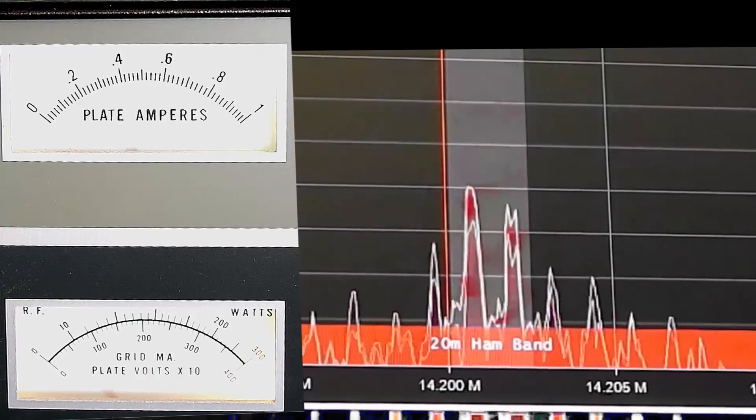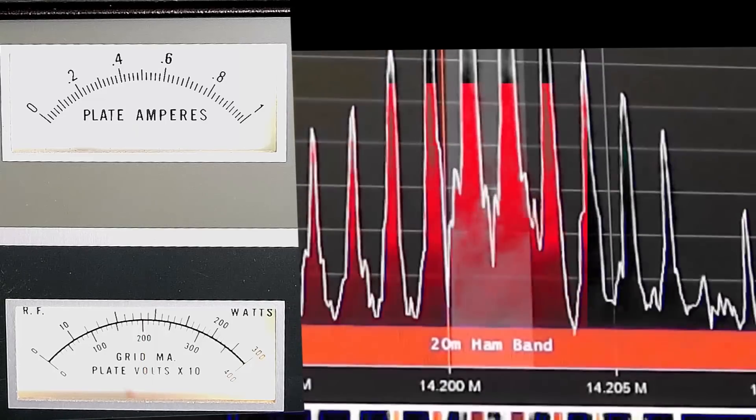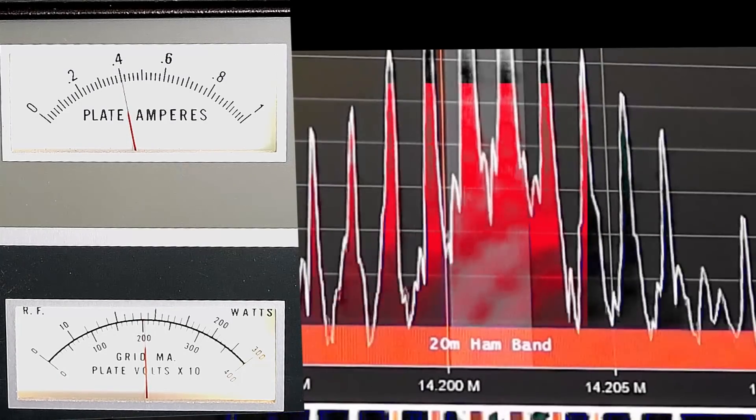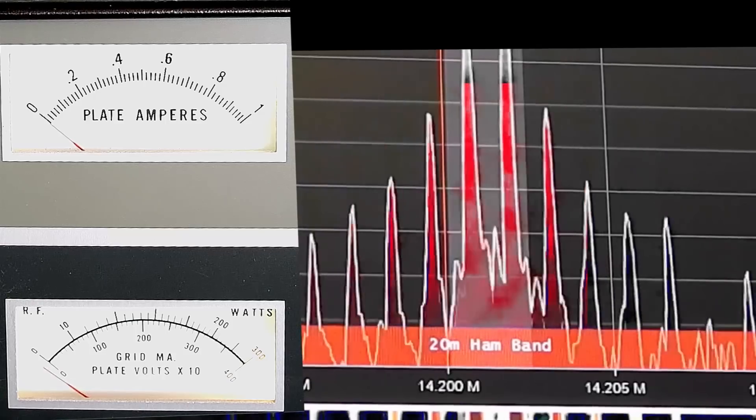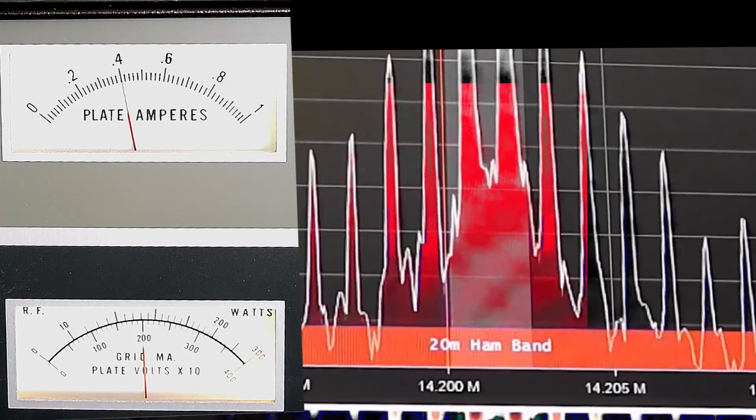Now look at the bandwidth on the scope. It's a lot wider than it was because the linear is not linear. You can see those lines way out to the side.